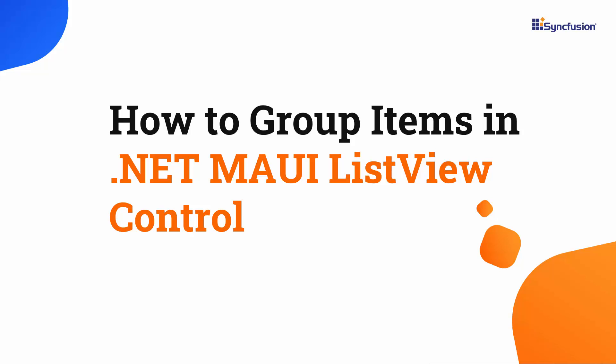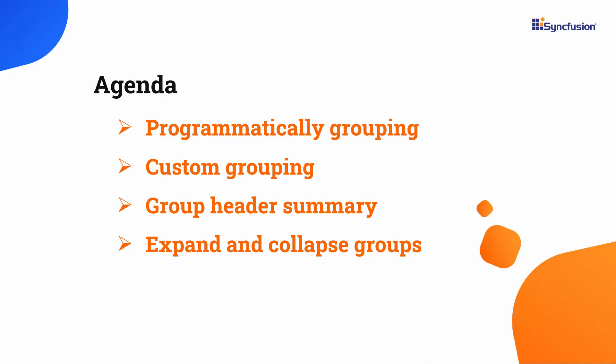Hi everyone, welcome back. In this video, I will show you how to group items in the .NET MAUI ListView control. I'll start by showing you how to group items programmatically and create a custom grouping. Then, I'll demonstrate how to sort groups and display a group header summary. Finally, I'll show you multi-level grouping and how to expand and collapse groups as well as group header customization.